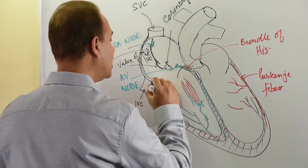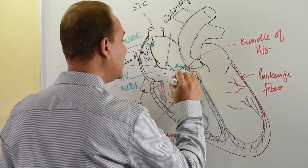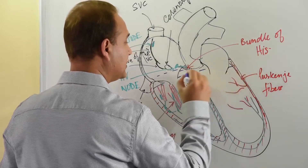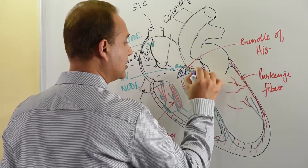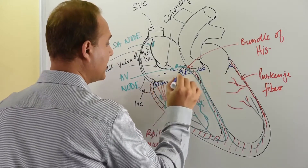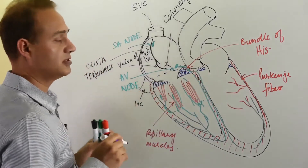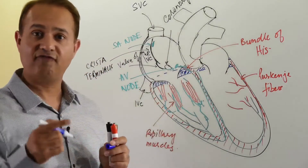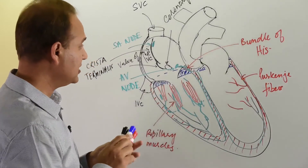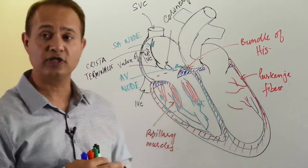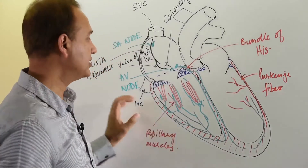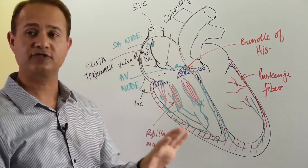One more structure worth noting — not directly part of the conduction system but relevant — is the fibrous ring that separates the atria from the ventricle. This fibrous skeleton is important because it insulates the atria from the ventricle.